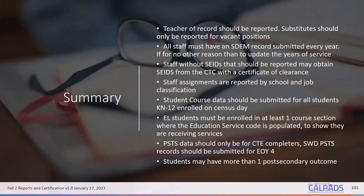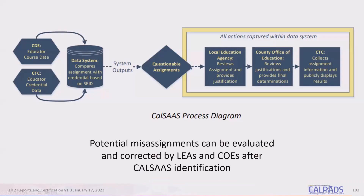That is telling the CDE that yes, we know we have this student who's not receiving services, and you should have some local record of the parent declining those services. Post-secondary status data should only be for CTE completers. For students with disabilities, it is reported into year four. Students may have multiple post-secondary outcomes — for example, going to the military and college.